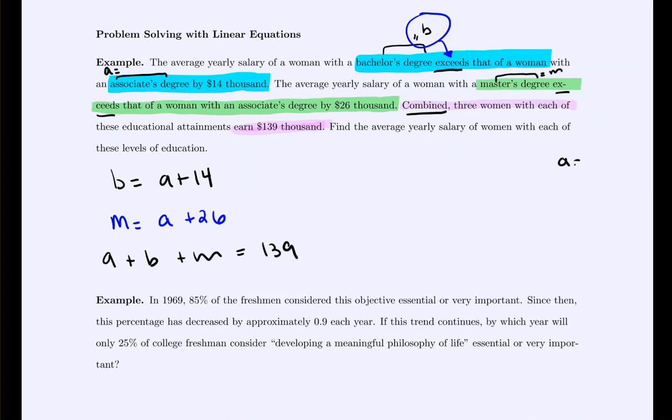So that would give us the equation A plus B plus M equals 139. And in the end, we want to know A equals what, B equals what, M equals what. Now the key thing to remember is you can only solve an equation in a single variable. So you can't solve this equation as it's written because there's two variables. You can't solve this equation as it's written because there's two variables. And you can't solve this one because there's three. We can only solve things in a single variable.